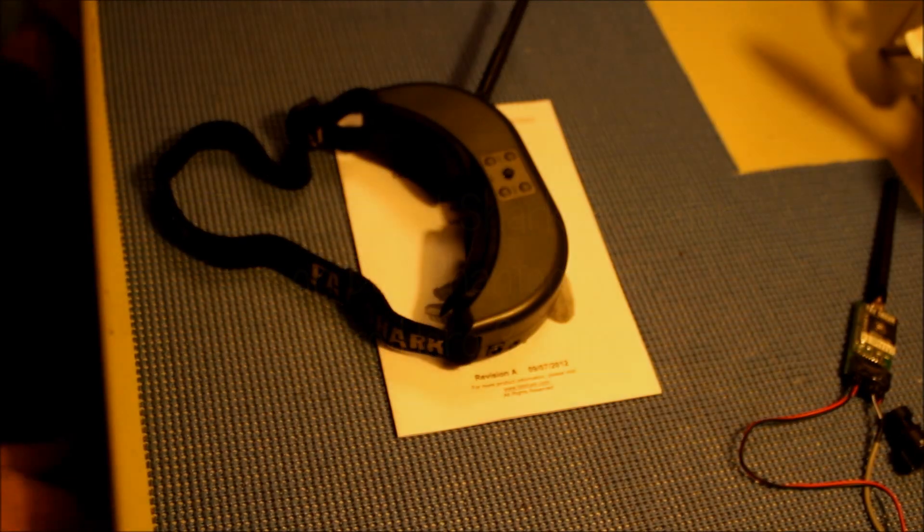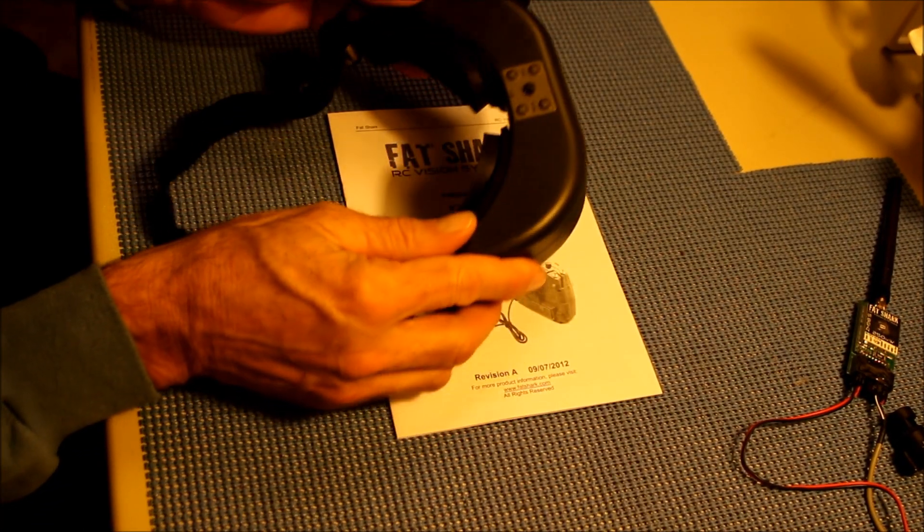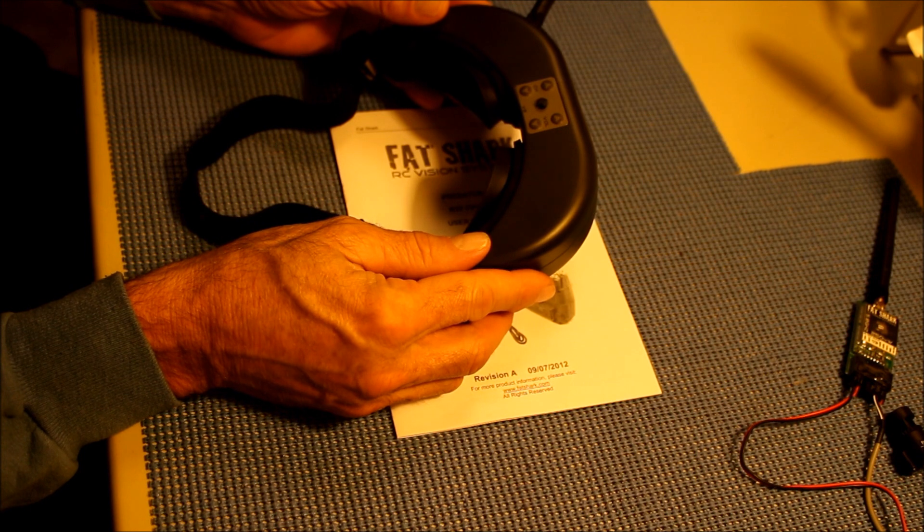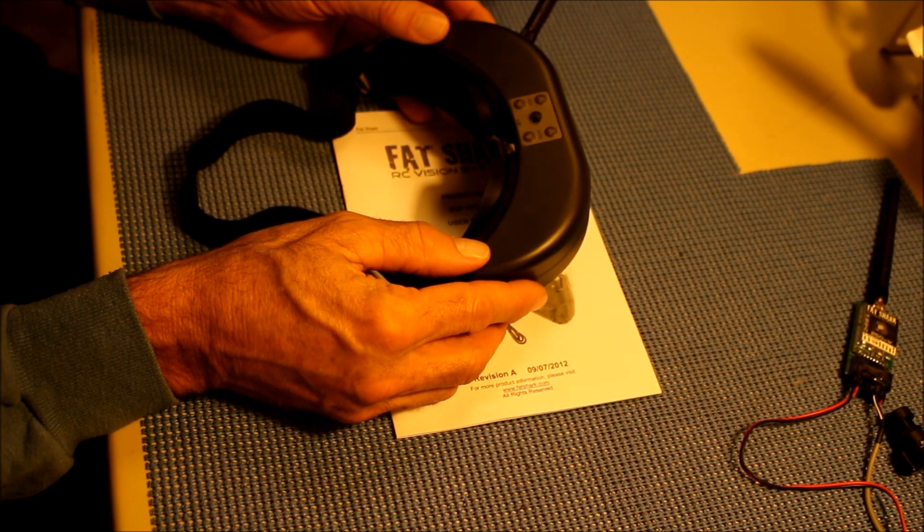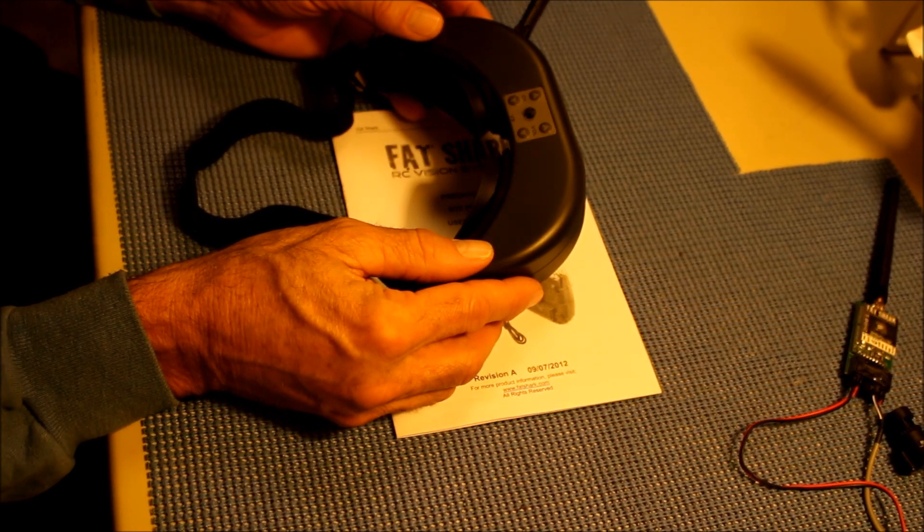In this video I'm going to explain how I installed my Fatshark Predator V2 FPV goggles to my DJI Phantom Quadcopter and also to the GoPro Hero 3 Black Edition camera.